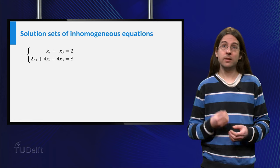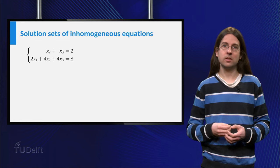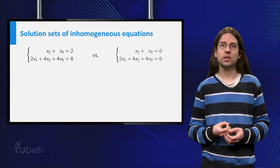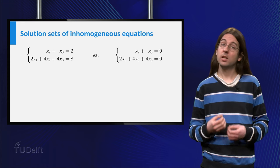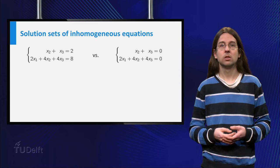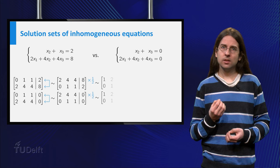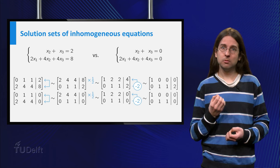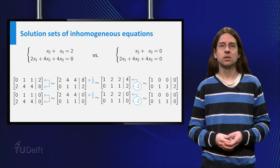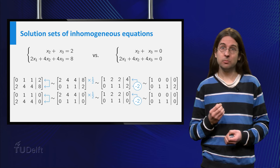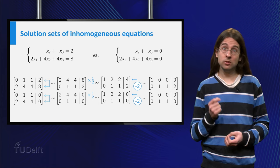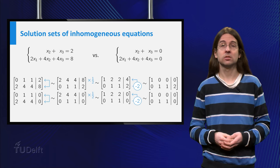Let us now consider an inhomogeneous system of equations and compare it to the associated homogeneous system, in which we have set all the right hand sides equal to zero. We see that the reduction to a reduced echelon form works in precisely the same way. The right hand column has to be modified in all the reduction steps, but never determines which kind of step is used.